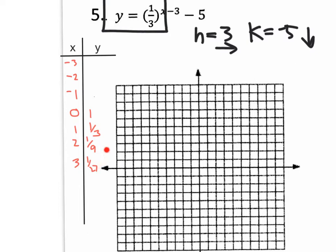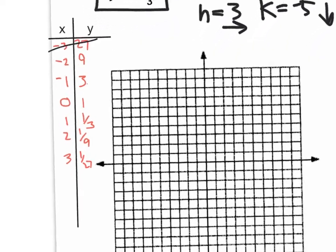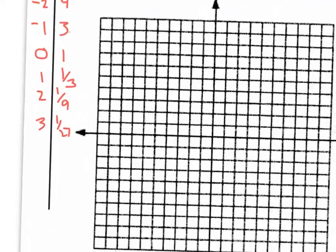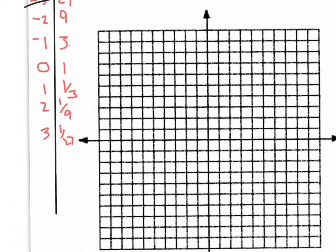One-twenty-seventh times three gives us one-ninth, times three gives us one-third, times three gives us one, times three gives us three, times three gives us nine, times three gives us 27 — which we're not even going to use because it's already off the graph. So we have our coordinates for the parent graph Y equals one-third to the X power.